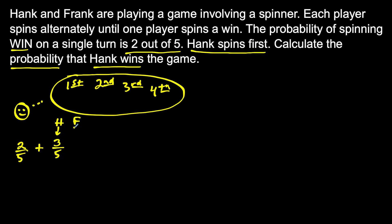Now Frank — we would need Frank to not win as well. So the probability of Frank not winning when he spins is also three out of five, and we would multiply those. But now we want Hank to win on the second spin, so the probability of Hank winning when he spins is two out of five. This accounts for him winning on the first spin and him winning on the second spin.